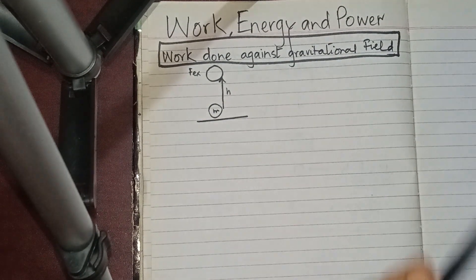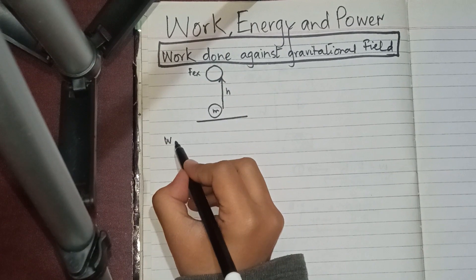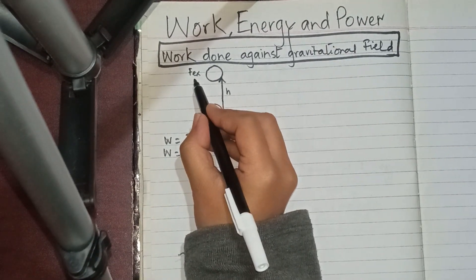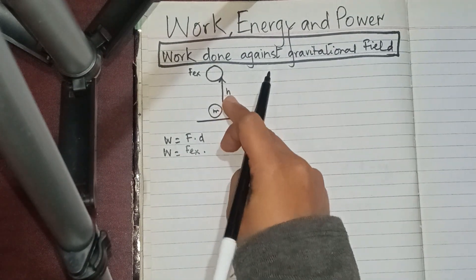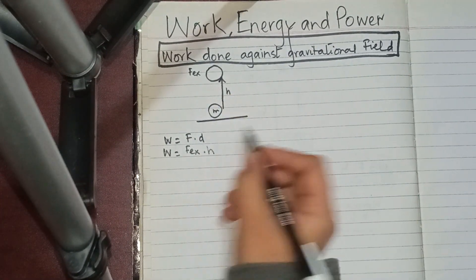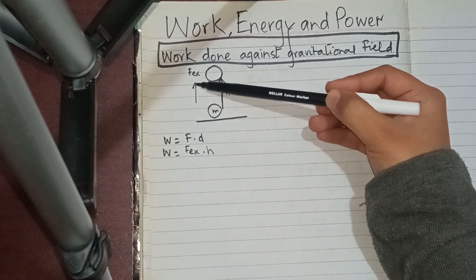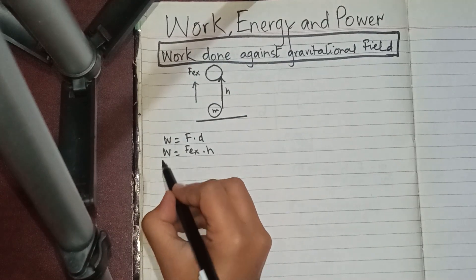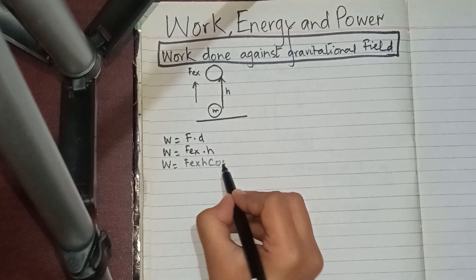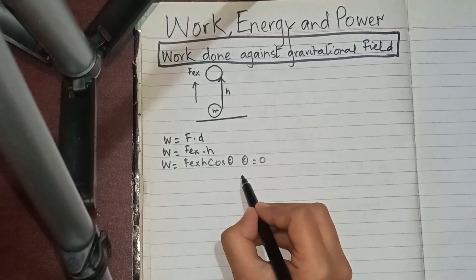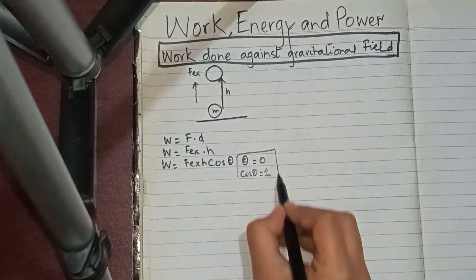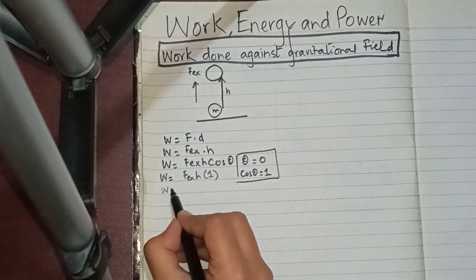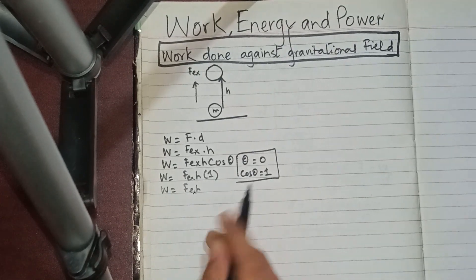We have to find the work done by the external force. The formula is: work done = force × displacement. So the work done by the external force equals the external force multiplied by height h. Since the force and displacement are in the same direction, the angle between them is zero. So W = Fₑ × h × cos(0°) = Fₑ × h × 1 = Fₑ × h.